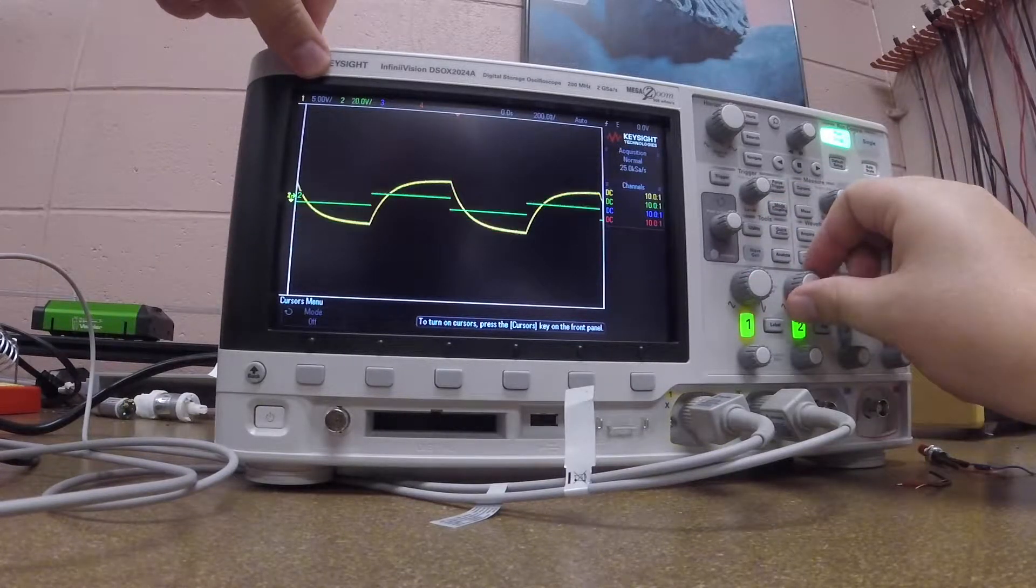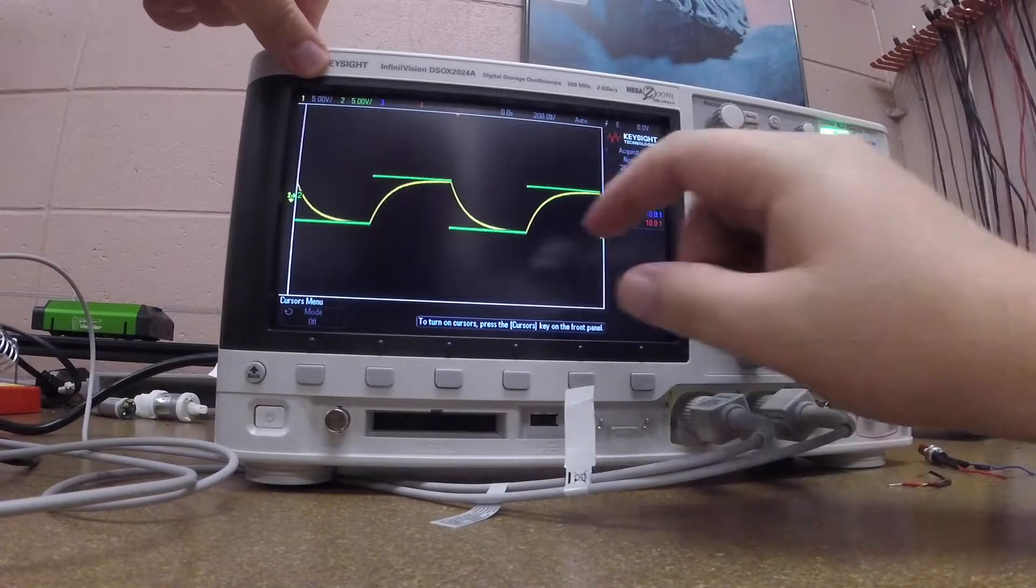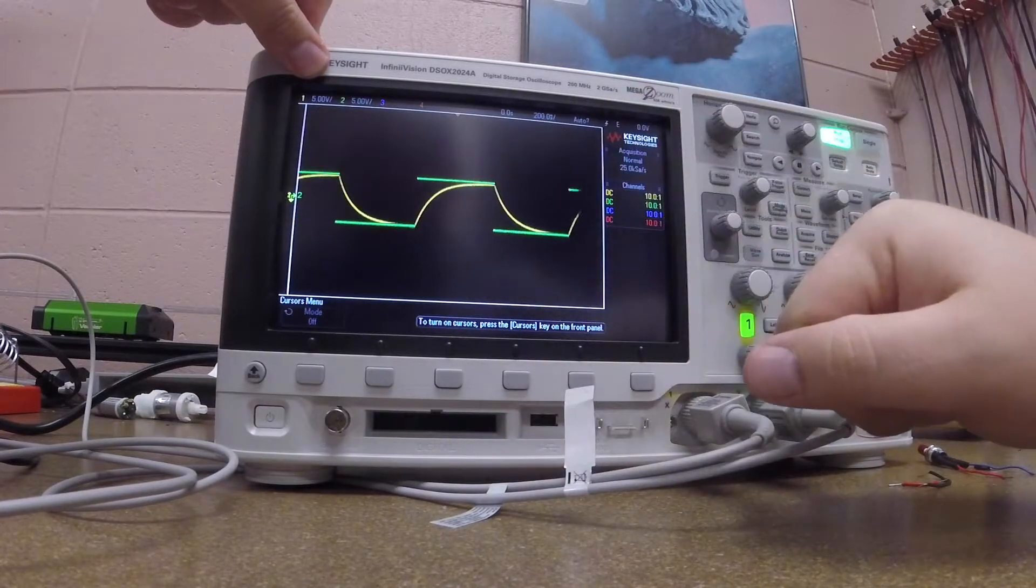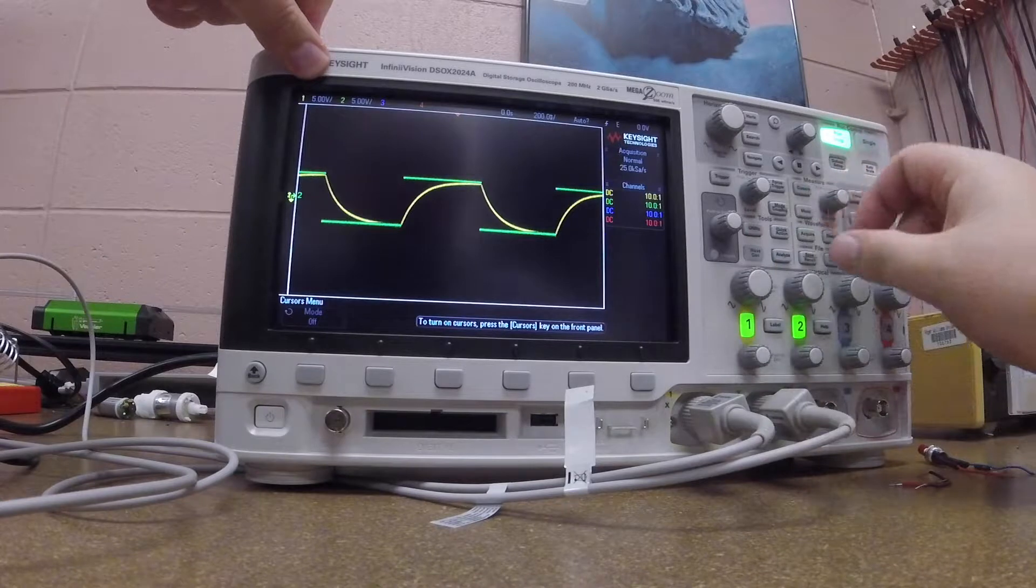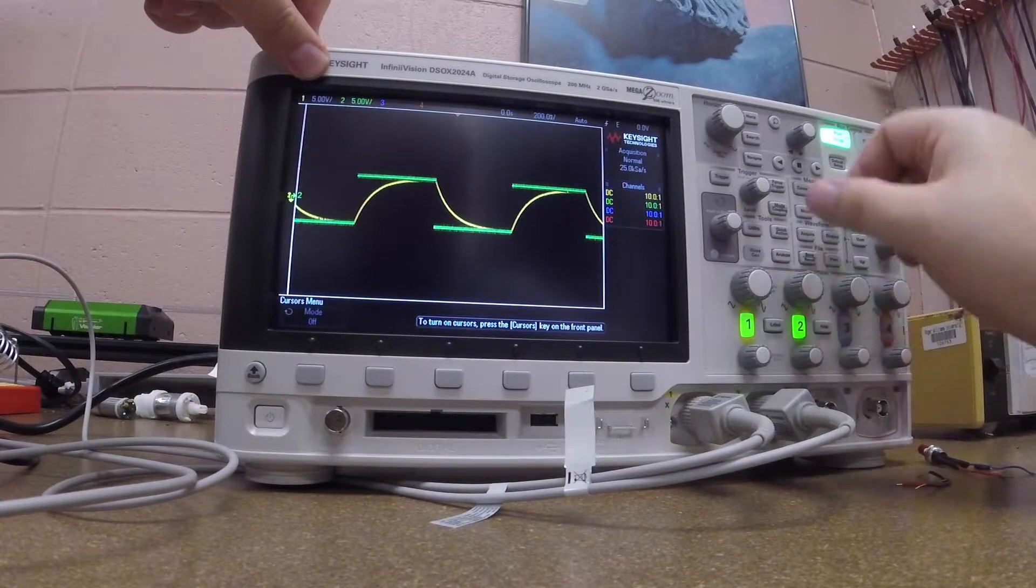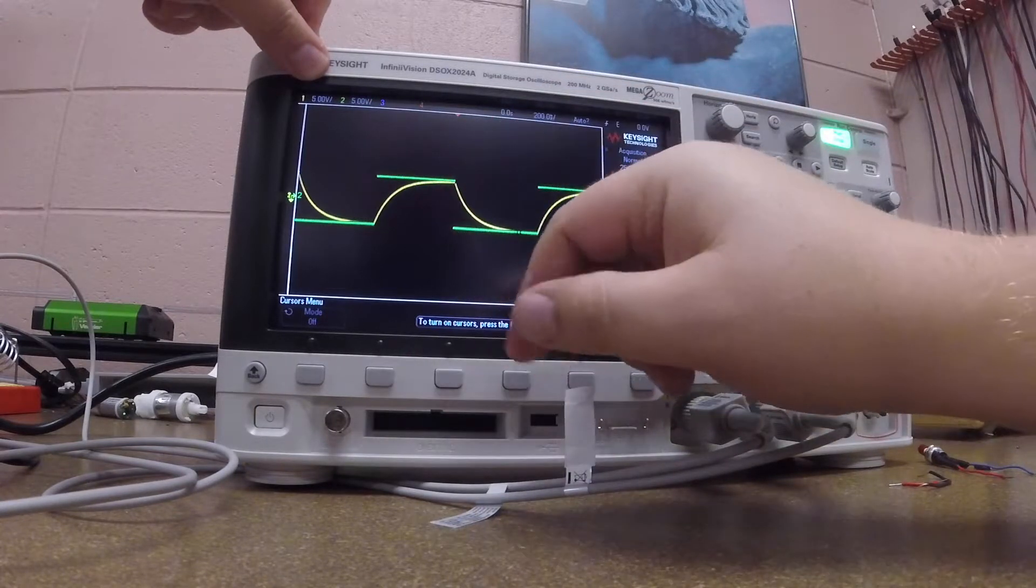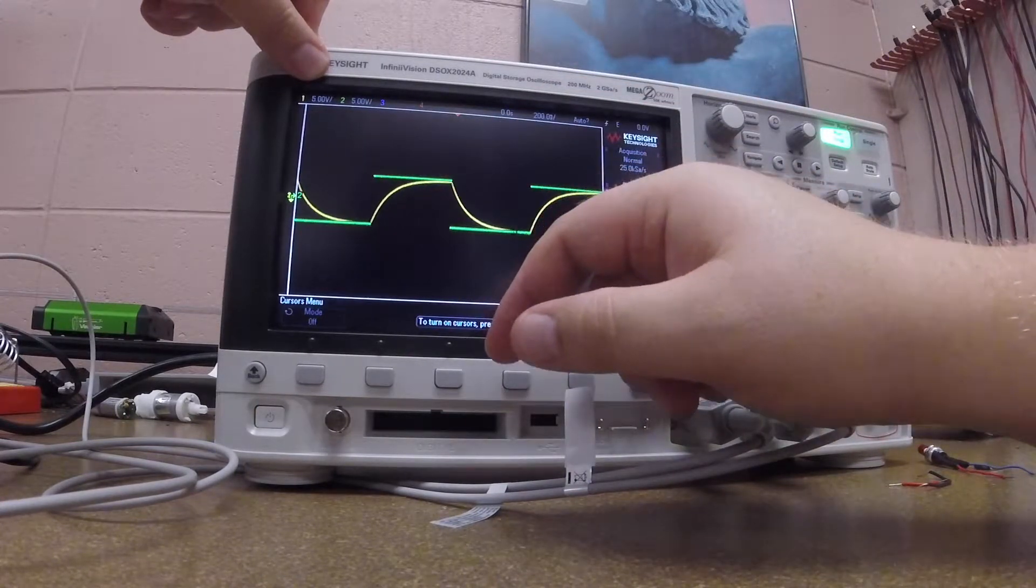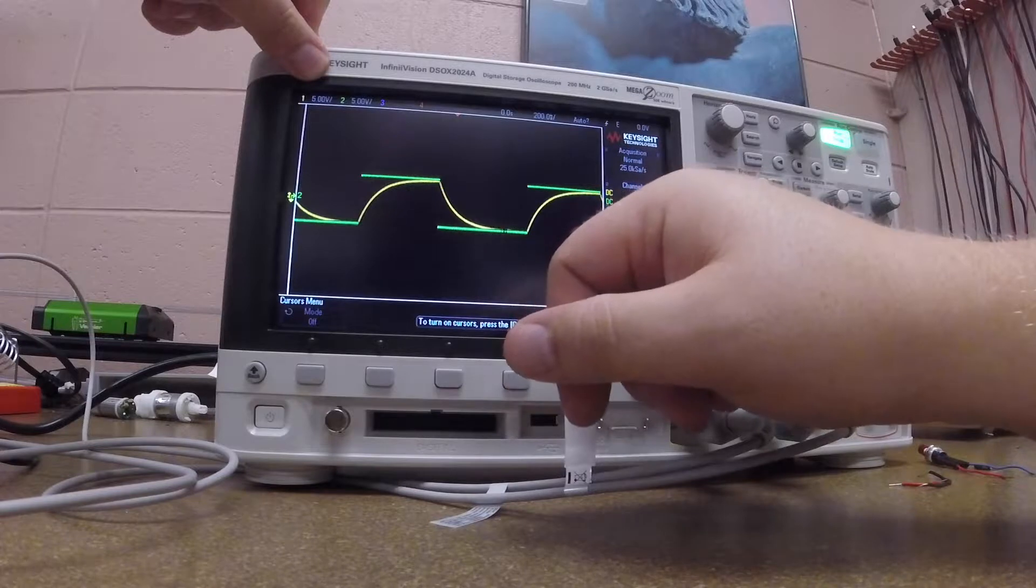I can do the same thing with the other one. All this is representing is each of these squared grid boxes is a division. The number of volts per division tells me based on that scale exactly how it is. You can see that right now my waveforms are ranging from plus 5 to minus 5 volts.